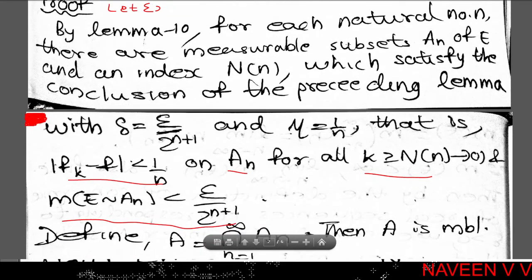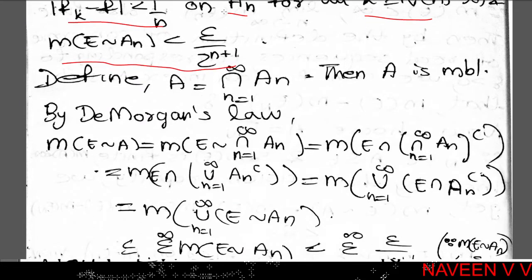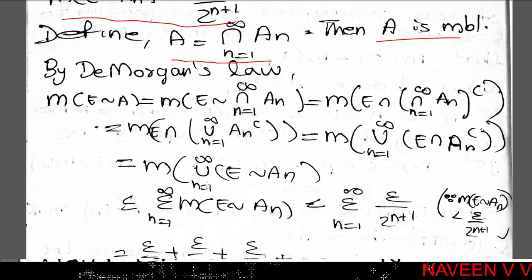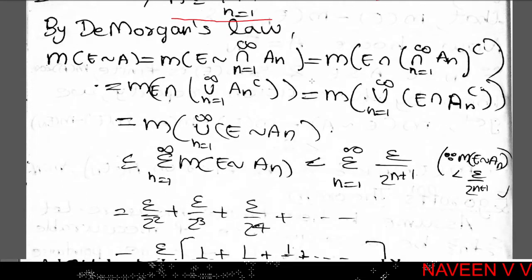Now define A equal to the intersection over n equal to 1 to infinity of An. Then each An is measurable, and A, being a countable intersection, is also measurable. By De Morgan's law, measure of E minus A equals measure of E minus the intersection over n equal to 1 to infinity of An, which equals the measure of the union over n equal to 1 to infinity of E minus An.